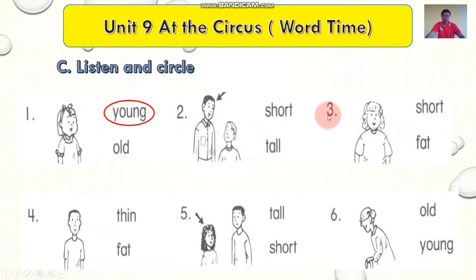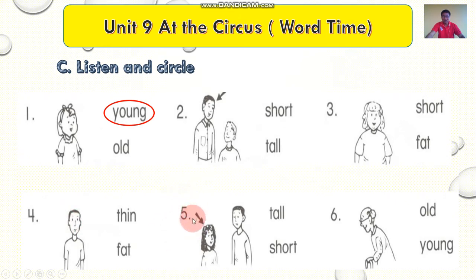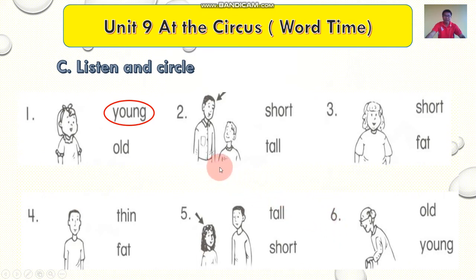Number three: fat. Fat. Number four: thin. Thin. Number five: short. Short. Number six: old. Old. Okay everyone, are you okay with this exercise? Yes. Are you finished? Yeah, let's go and check the answer.